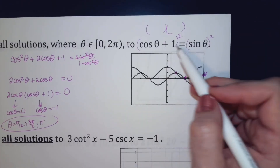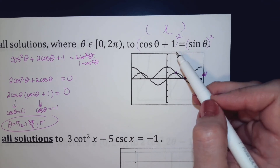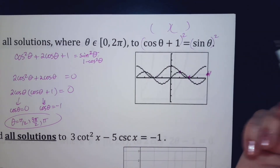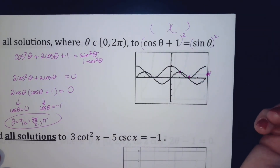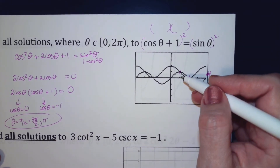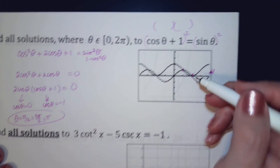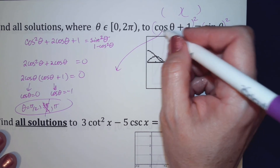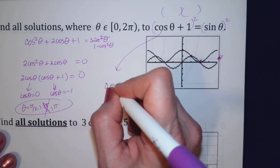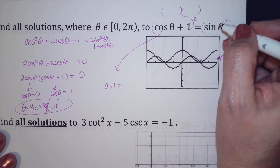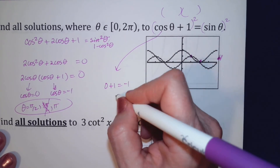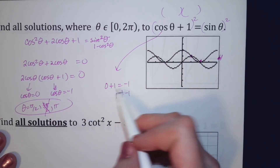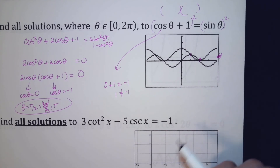When you square both sides, you create a false situation, because squaring something negative turns it positive. So this is one of those times we need to go back and check our answers — we can check using the graph. Only pi over 2 and pi are working. So 3pi over 2 is an extraneous solution. If I plug 3pi over 2 in: cosine at 3pi over 2 is 0, so 0 plus 1 on the left; sine at 3pi over 2 is negative 1. So 1 equals negative 1 — it does not.